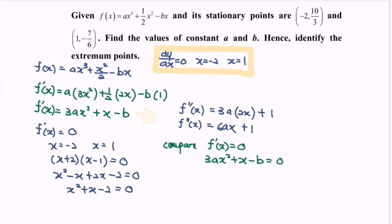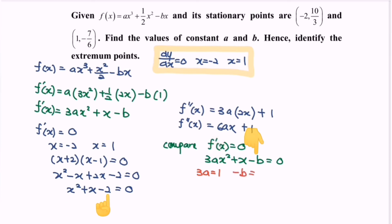Now we compare this with f prime of x. We can see that 3a equals one, so a equals one over three. And negative b equals negative two, so b equals two.